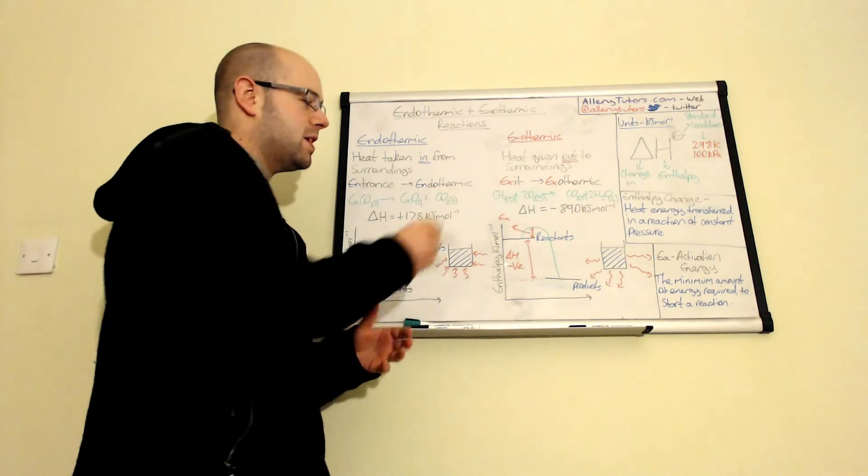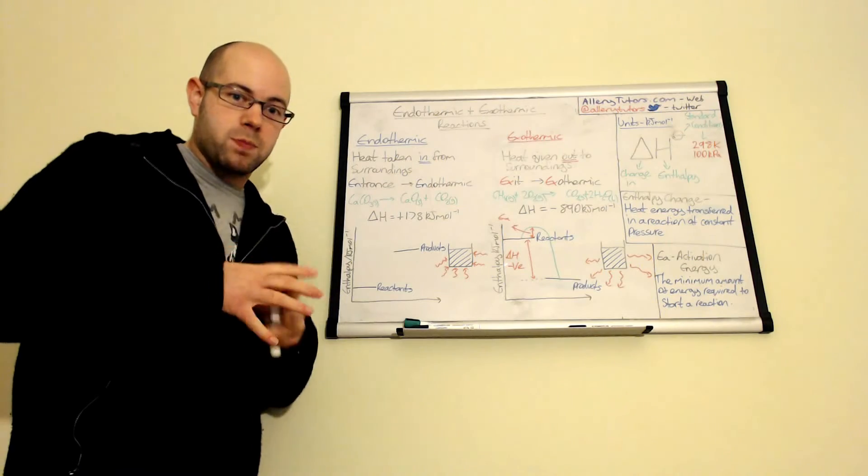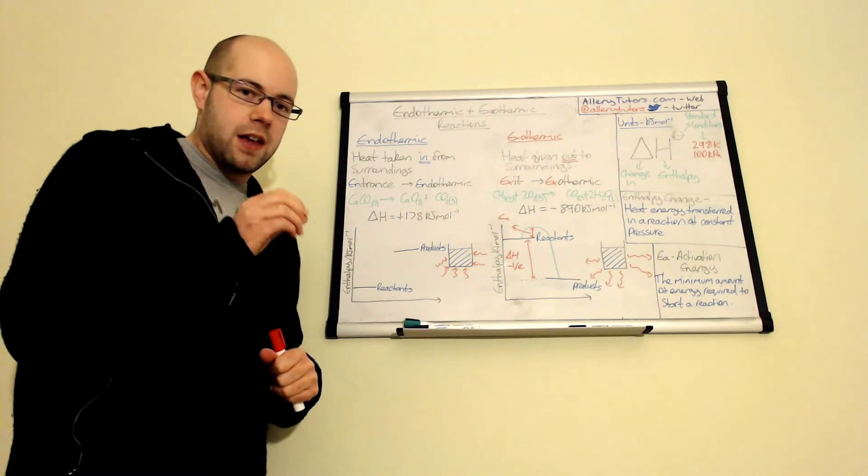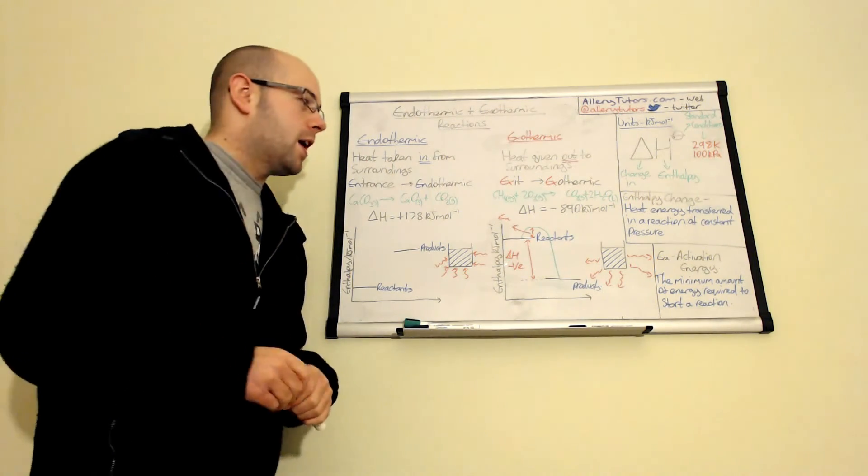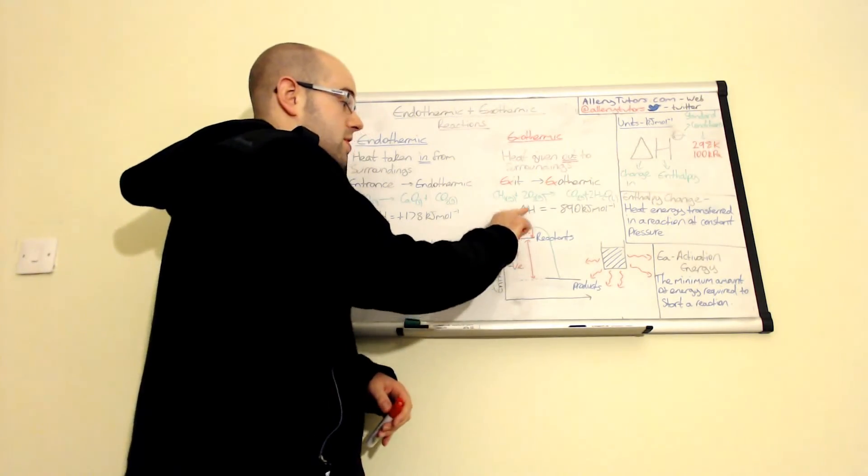A prime example with methane is that methane at room temperature doesn't spontaneously combust. What you need is that extra little bit of energy to get the reaction going. And that energy could be a spark. It could be another flame. But that energy is what we call the activation energy. So slight increase in energy initially.